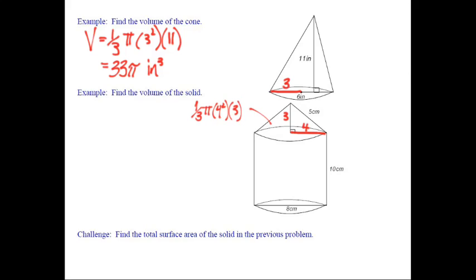That's one-third base area, which is πr² times the height, and the height in this case is 3. So that goes there. That's my radius squared. Then I'm going to get 16π. So that's the top piece.